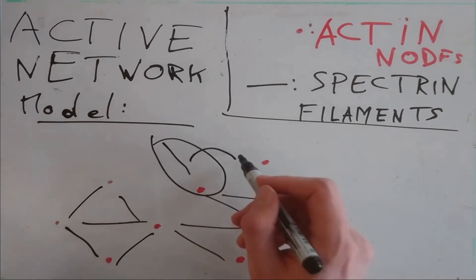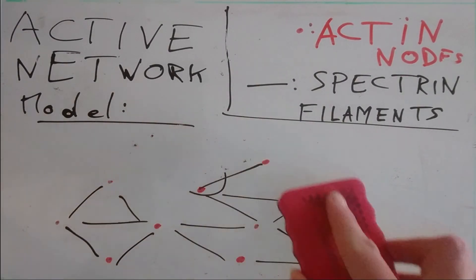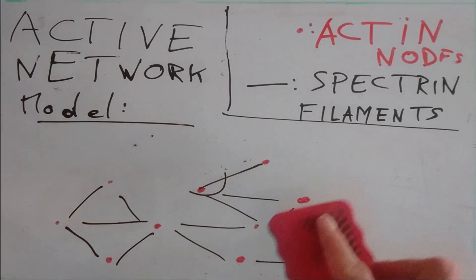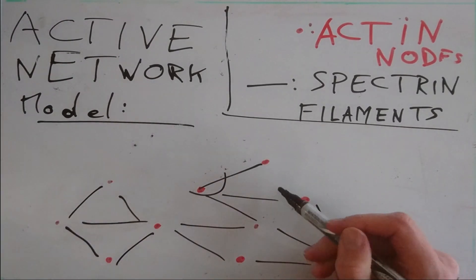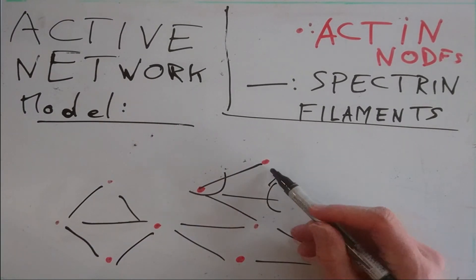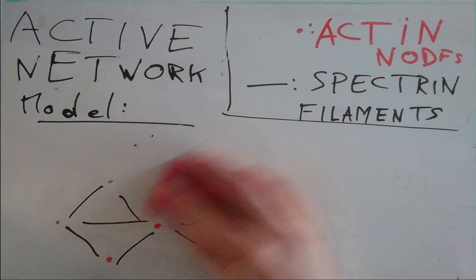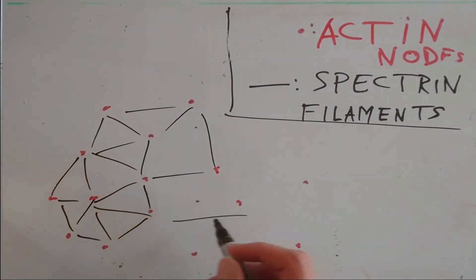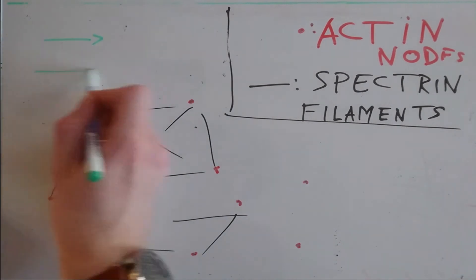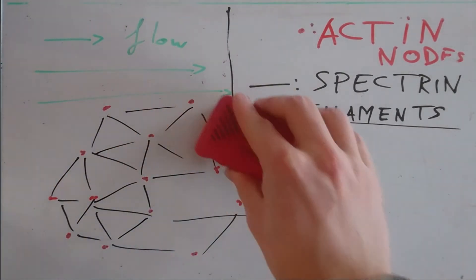A better representation is the active network model, where the spectrin filaments dissociate through ATP-induced fluidization. The strain-softening model obtained from such a representation gives a closer fit, such that the cytoskeleton is able to relieve itself of all stresses.